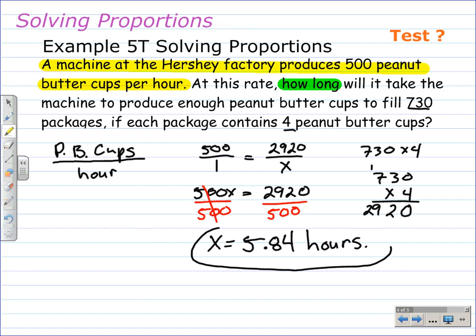And that would be hours. So it's going to take 5.84 hours to produce enough peanut butter cups to fill 730 packages when they each contain four peanut butter cups.